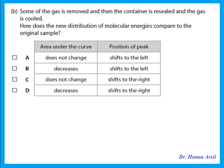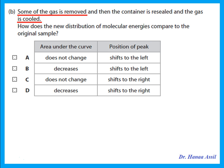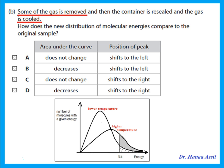Some gas is removed from the container, which is then resealed and cooled. Removing some gas decreases the area under the curve, since the area represents the total number of molecules present — so the answer is B or D. Cooling the gas shifts the peak to the left, since a lower temperature means the peak moves left and a higher temperature shifts it right.